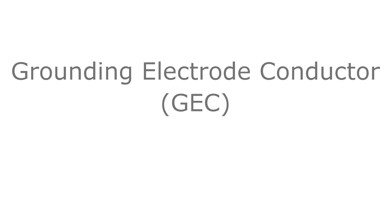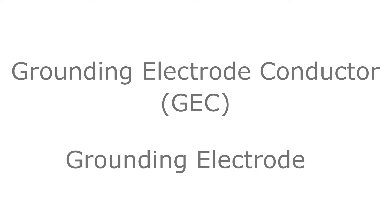There are two main components to the AC grounding electrode system. The first is the grounding electrode conductor, or GEC. This conductor is used to connect the grounding electrode to the equipment grounding conductor, or to the grounded conductor of the circuit at the service equipment. The second is the grounding electrode. This is a conductor, like a rod, pipe, or plate, in direct contact with the earth. Its purpose is to provide a low impedance connection to the earth.